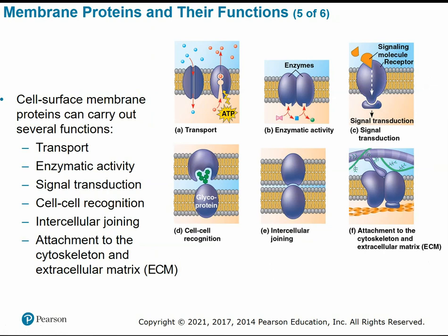Membrane proteins on the cell surface carry out several functions depending on their shape and structure. Some membrane proteins function in transport — channel proteins act like passageways for ions to travel across the membrane, while more specific carrier proteins carry specific molecules across. Some membrane proteins function as enzymes, facilitating and catalyzing certain chemical reactions. For example, mitochondria undergo cellular respiration to make ATP, utilizing enzymes in the membrane of the mitochondria.